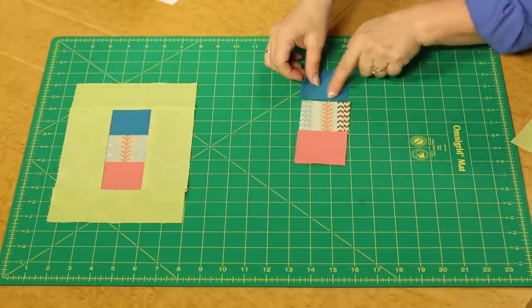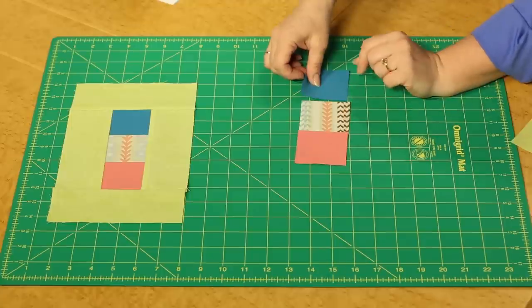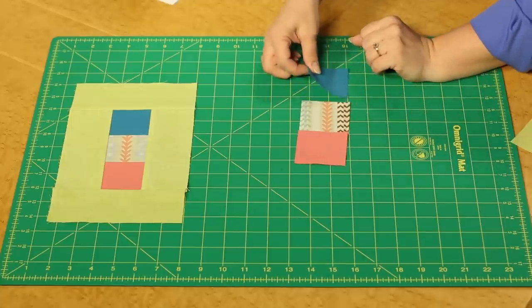So simple seaming quarter inch seam here and here and you can press your seam allowances in either direction. It won't make a difference at this point.